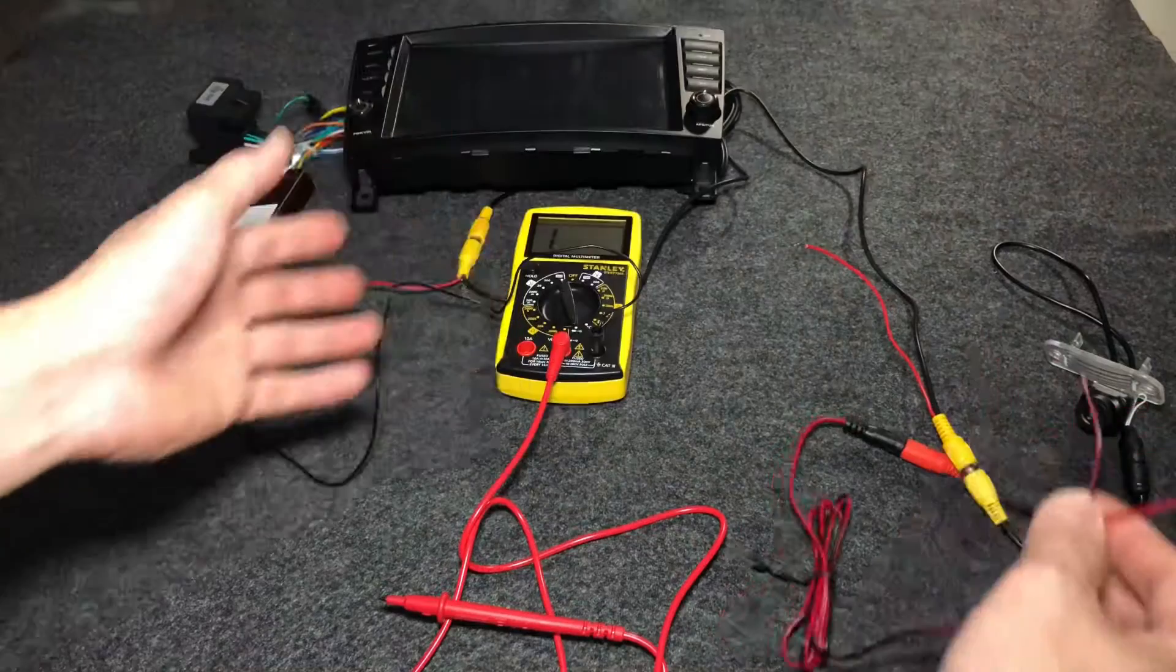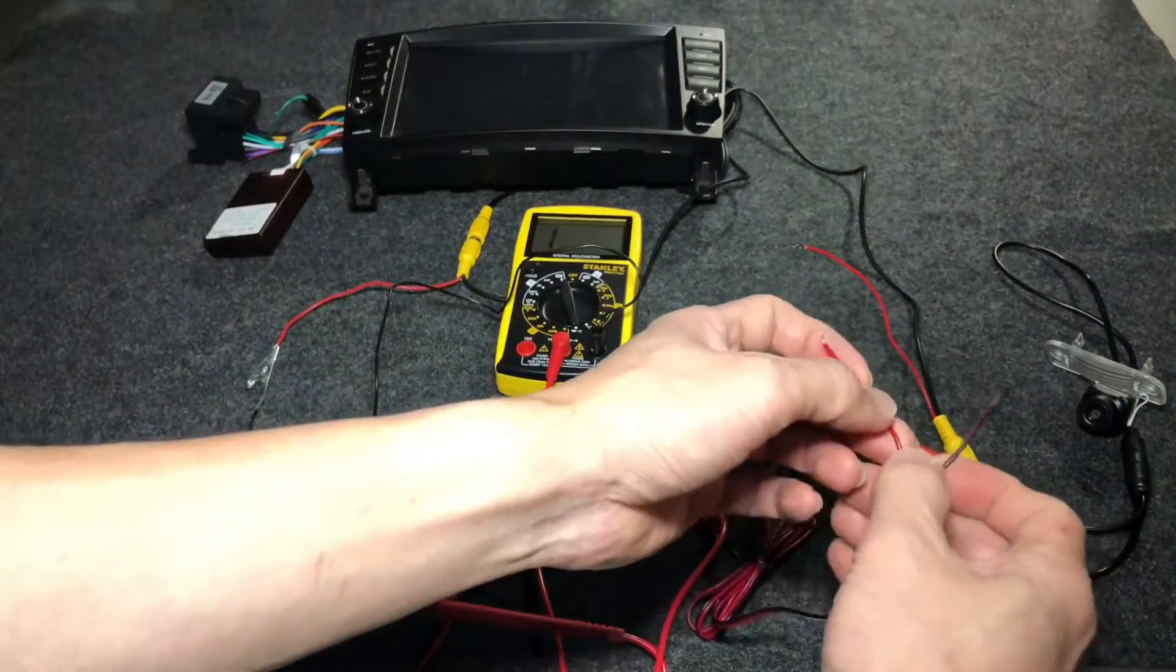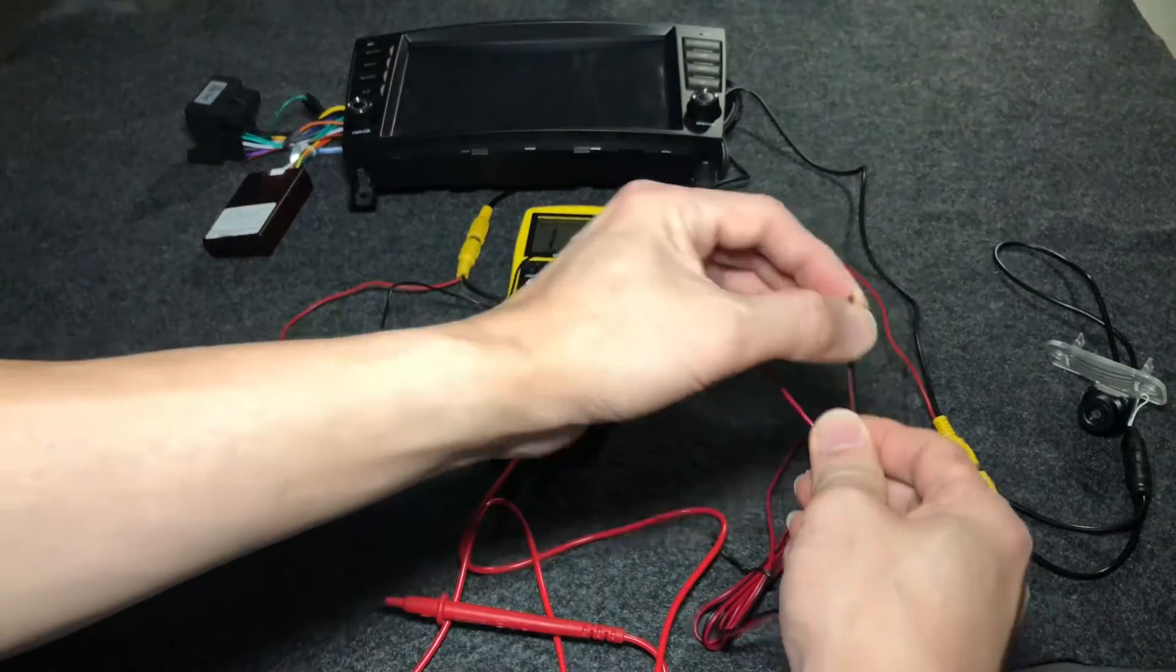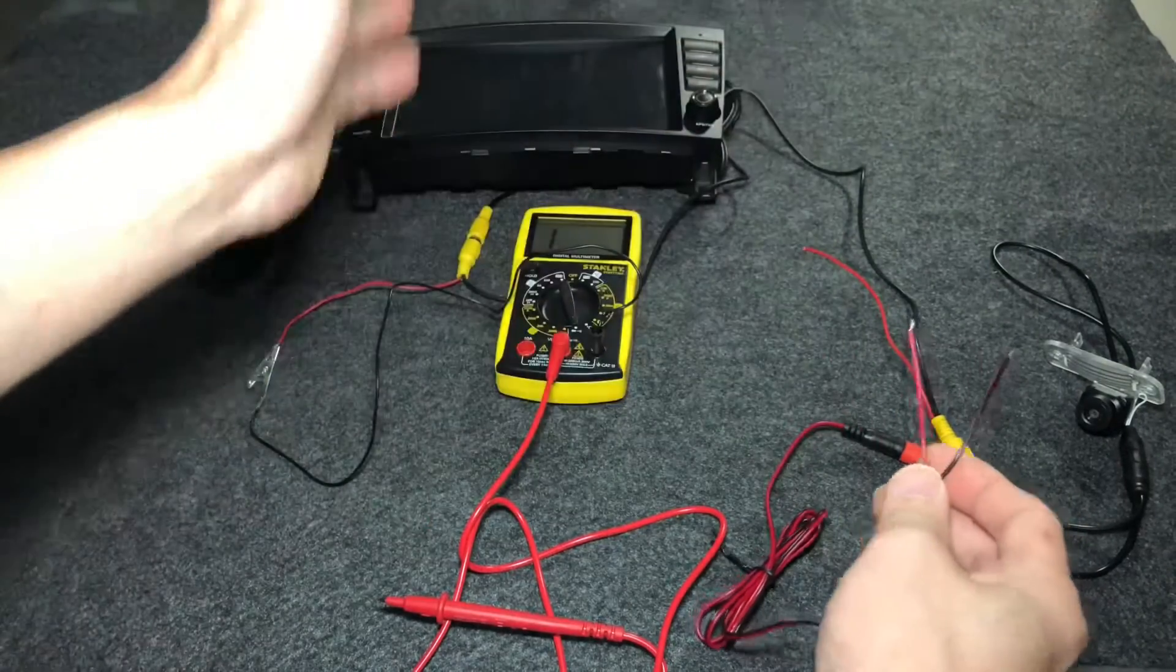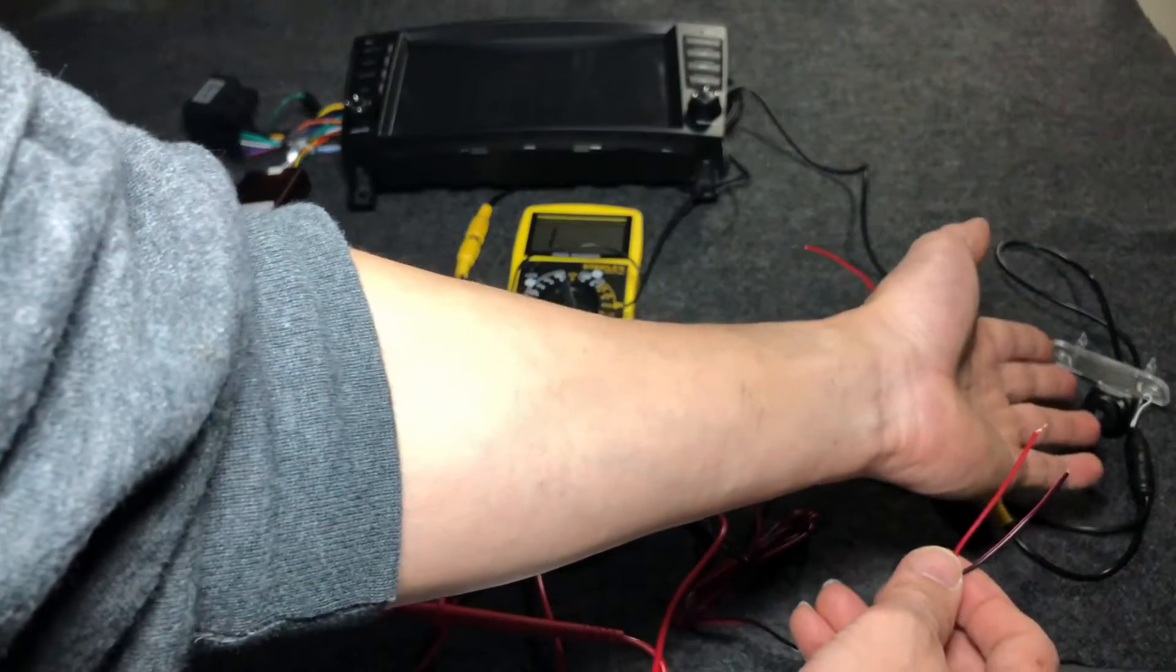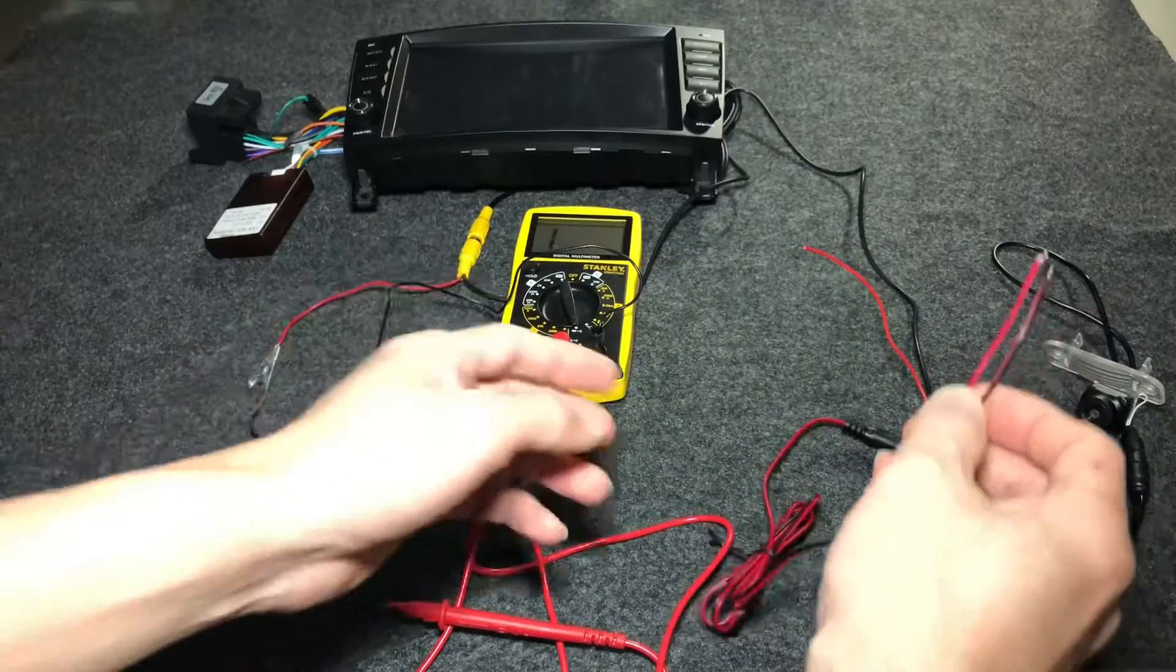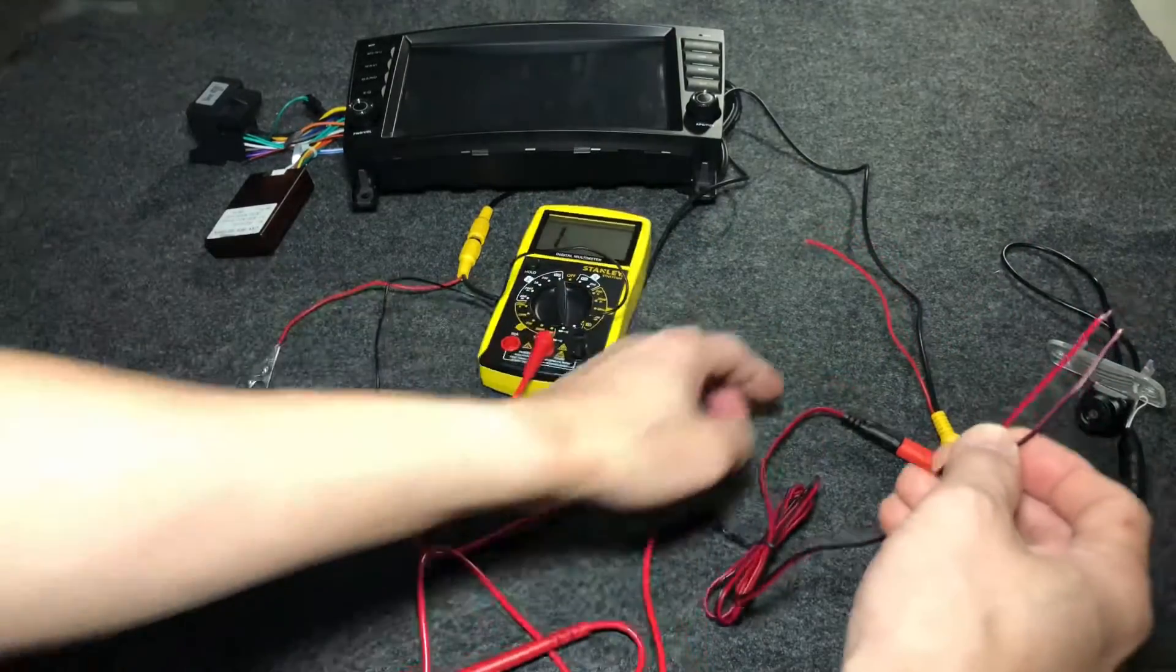It should apply for pretty much most of them. The idea here is you have a video signal, but you have to find a way to turn on the reverse camera. And what they did is provide this power line - you just need to make sure that 12 volts pass into this power line when the car is in reverse.